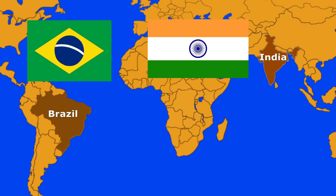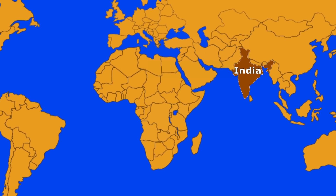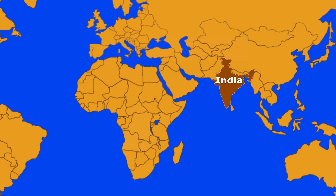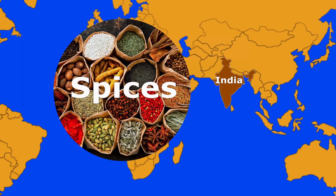India is the second largest populated country in the world, whereas the country which ranks first in population is China. India is well known for its spices in the world, and in India it is Kerala that is famous for spices.